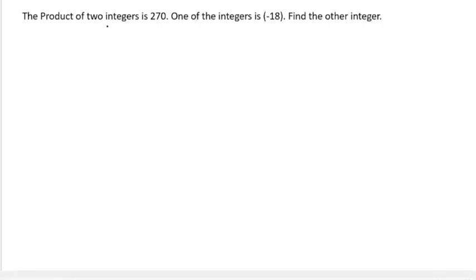The product of two integers is 270, so there are two integers. Their product means they have been multiplied to get 270. One of the integers is given as minus 18. Find the other.